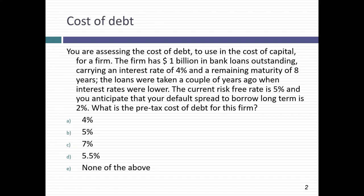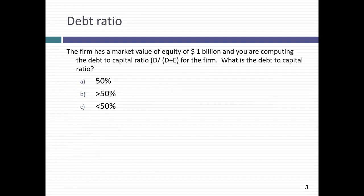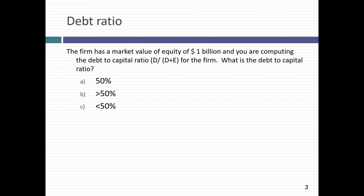The pre-tax cost of debt for this company is 7%, and it has a billion dollars in bank loans outstanding. To go from cost of debt to cost of capital I need weights on debt and equity. If the market value of equity is also a billion, it looks like a 50-50 split — but it can't be that easy. What am I missing when I say the debt is a billion dollars?